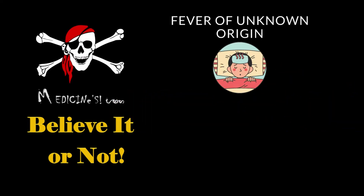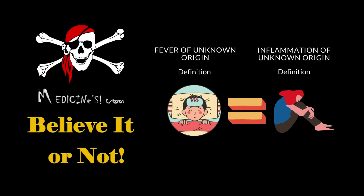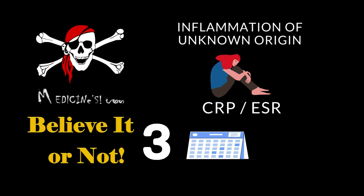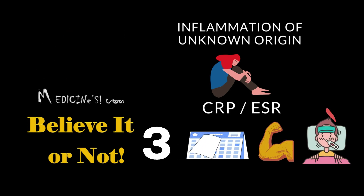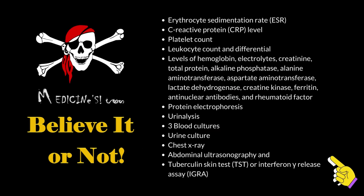Believe it or not, there also exists a condition closely related to fever of unknown origin, called inflammation of unknown origin. Inflammation of unknown origin has the same definition as fever of unknown origin, except for the body temperature criterion. It is defined as the presence of elevated inflammatory parameters — CRP or ESR — on multiple occasions for a period of at least three weeks in an immunocompetent patient with normal body temperature, for which a final explanation is lacking despite history taking, physical examination, and the obligatory tests listed above.